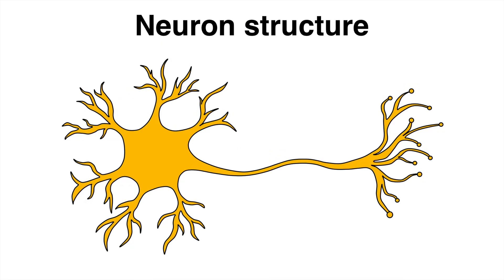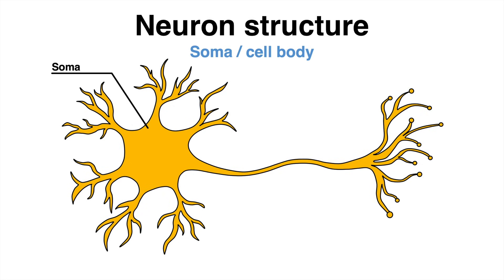Despite these classifications, there are characteristics that are shared between these subtypes. The cell body, also known as soma, is the main part of the neuron. The soma includes the typical organelles that exist in eukaryotic cells, such as the nucleus for example.